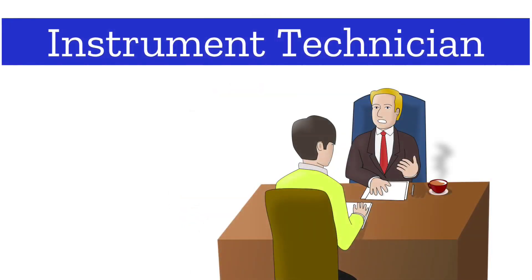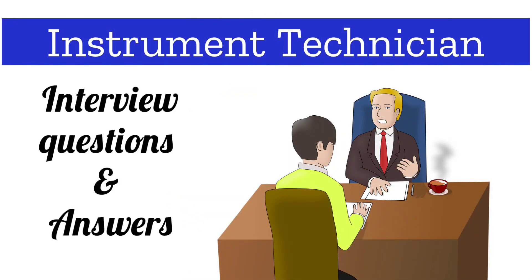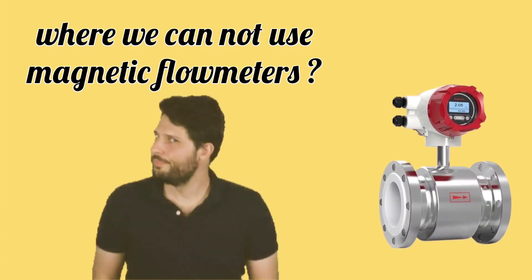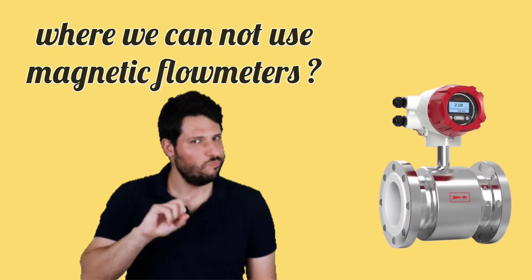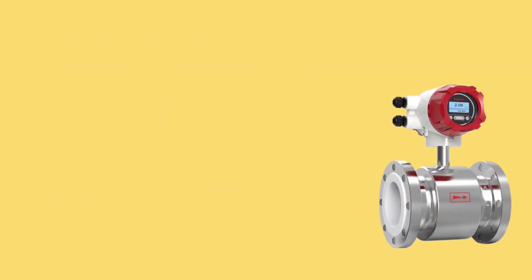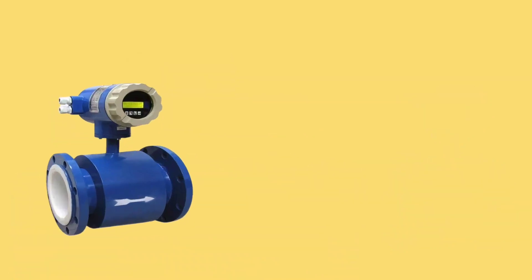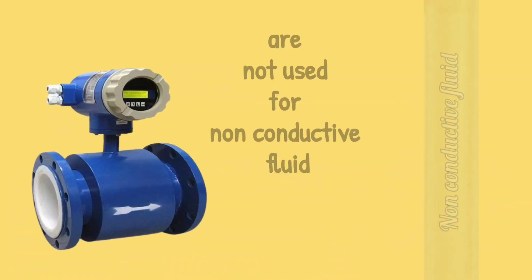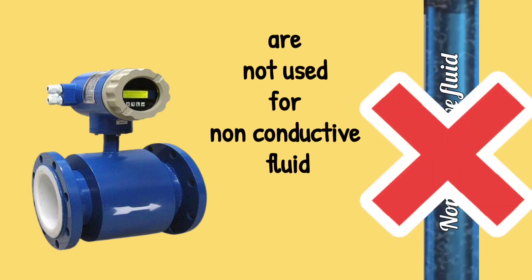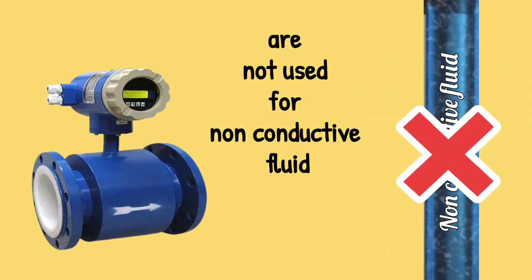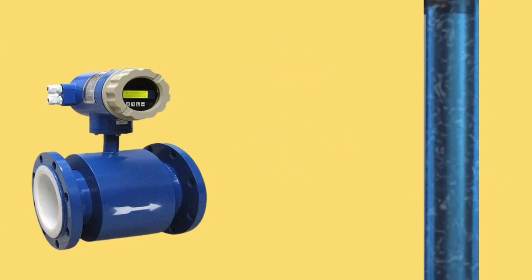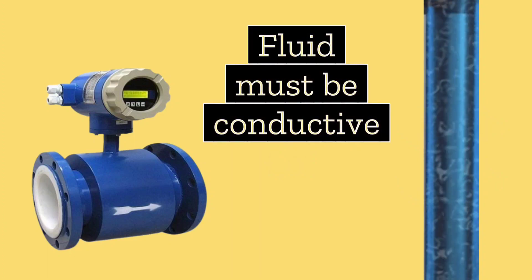In today's video, we are going to discuss interview questions and answers for instrument technicians. Let's take today's first question: Where can magnetic flow meters not be used? Magnetic flow meters are used in flow measurement. Magnetic flow meters cannot be used for non-conductive fluid — it is necessary for the fluid to be conductive for magnetic flow meters.